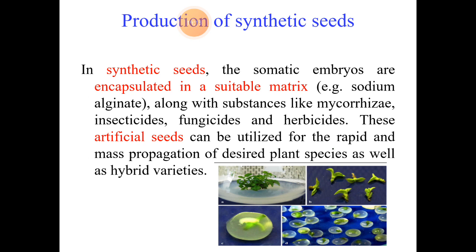Other biotechnological processes used in ex-situ conservation of plants include: production of synthetic seeds, where embryos of plants are encapsulated in a matrix like sodium alginate — commonly called synthetic or artificial seeds. Another technique is protoplast fusion in plant species. Since the plant cell wall acts as a barrier, when removed, the plant cell without its cell wall is called a protoplast. Such protoplasts are fused to get hybrids which cannot be obtained through conventional sexual hybridization.